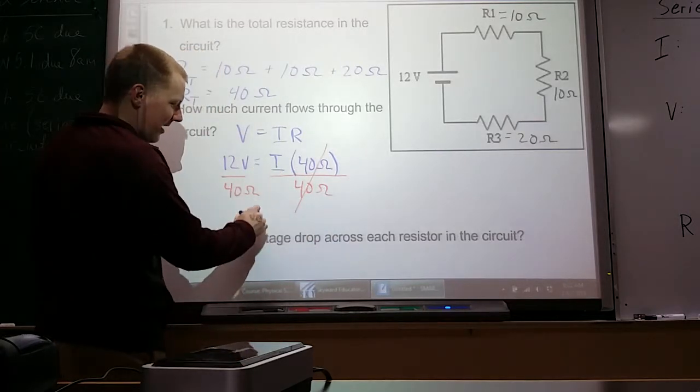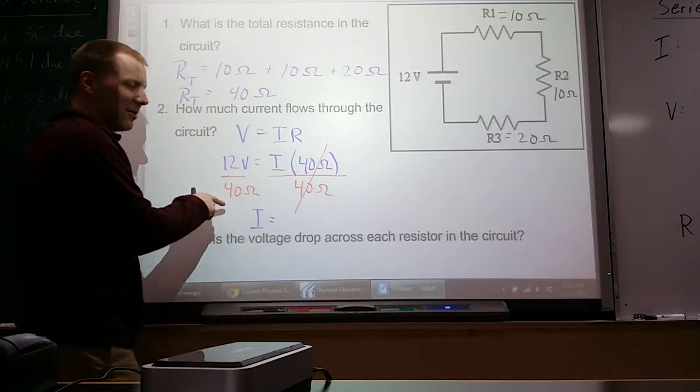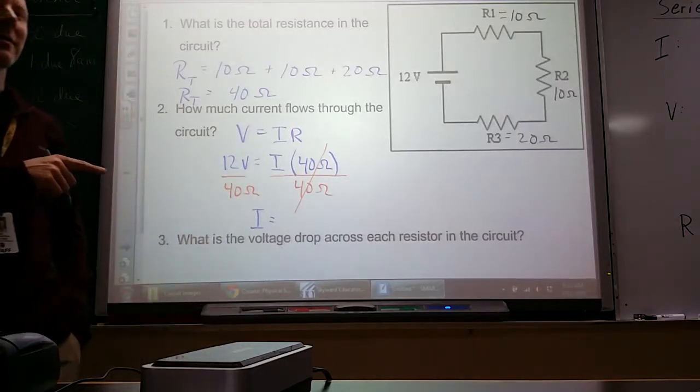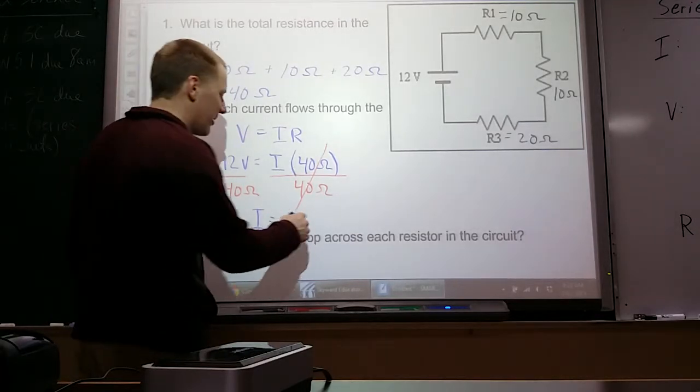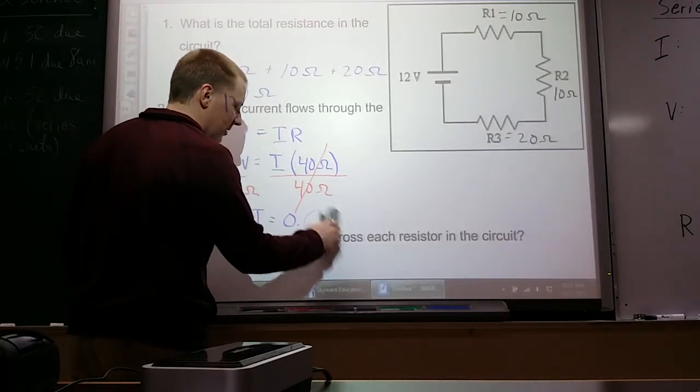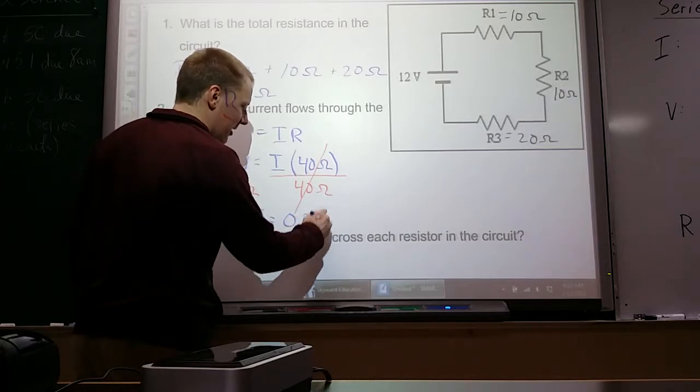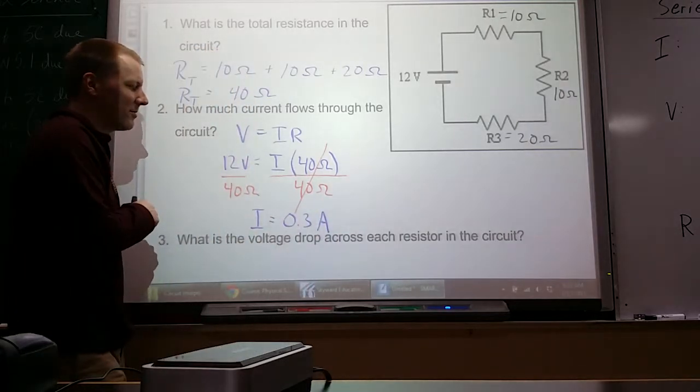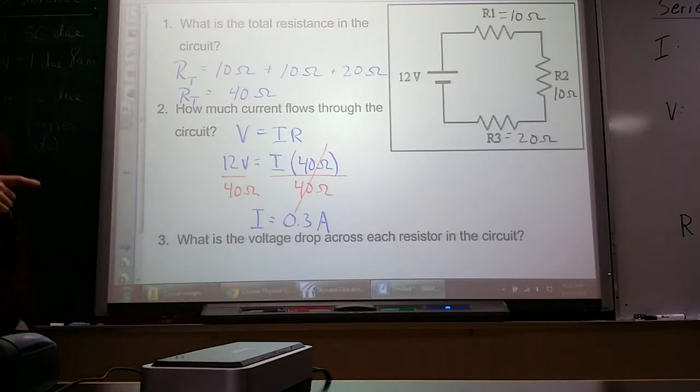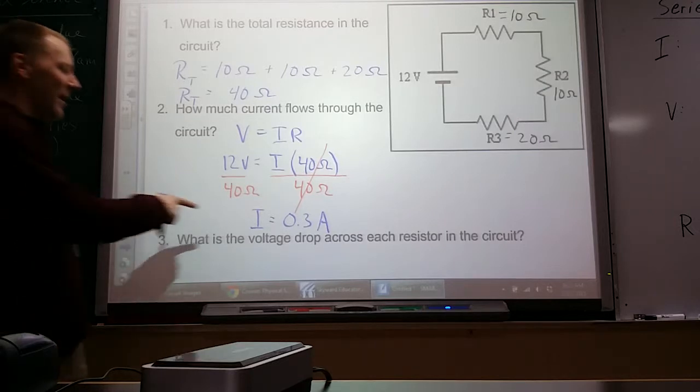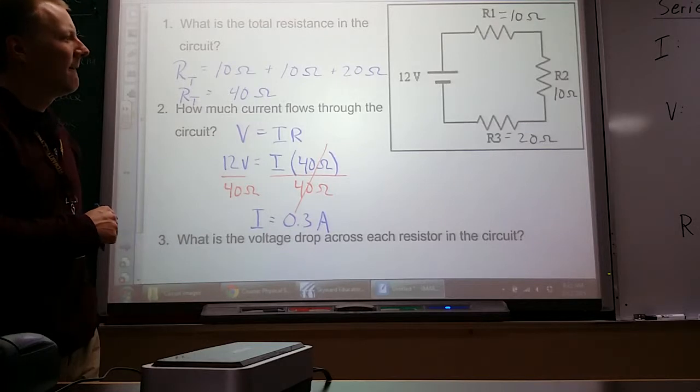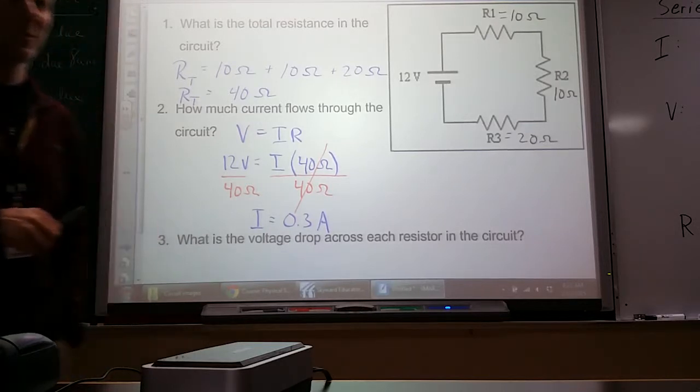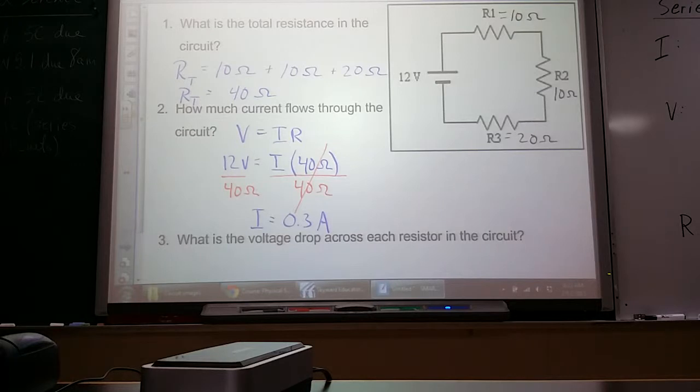leaving us just I equals 12 volts over 40 ohms. 0.3. 0.3 amps. 0.3 amps, you got it. We don't really use crossing out units on this one. We can't do that. That means that 0.3 amps goes throughout this circuit. Every component in the circuit has 0.3 amps going through it.